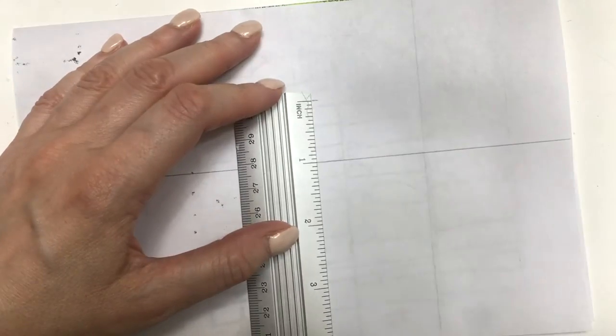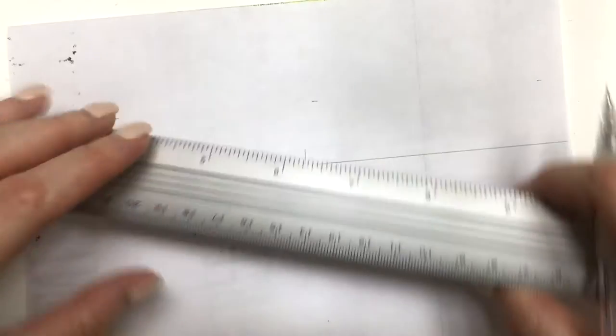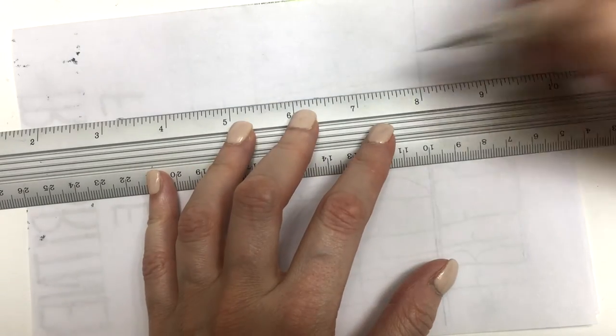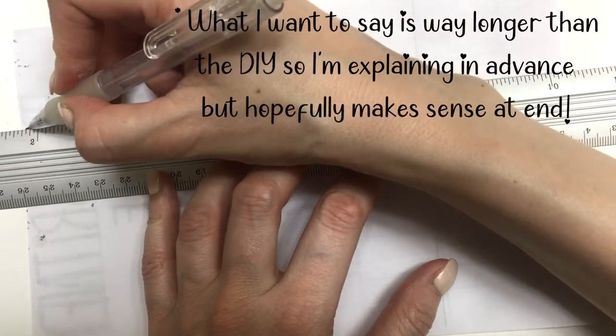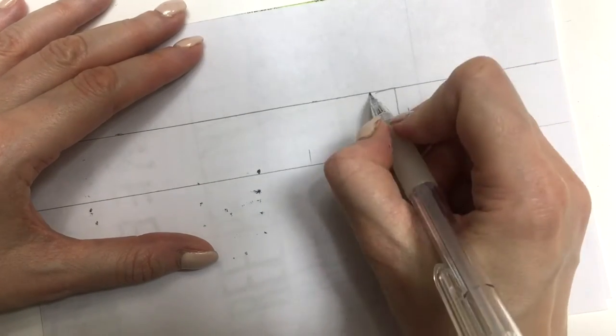For this I'm going to trace the letters of the hashtag Free Britney. First trace a line, mark one inch, trace another line, write backwards hashtag free space Britney. I'm going with my Sharpie.